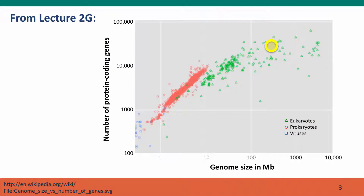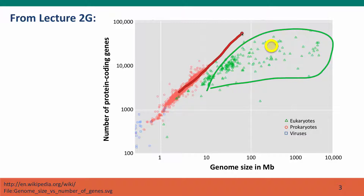This is a figure from Module 2 where we compare genome sizes. I'm showing it again just to remind you how much bigger eukaryotic genomes are than they would be expected to be based on the number of genes that they have. We have 10, 20, 50, 100 times more DNA depending on the species than we need to code for our genes.